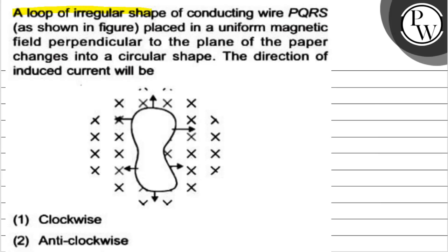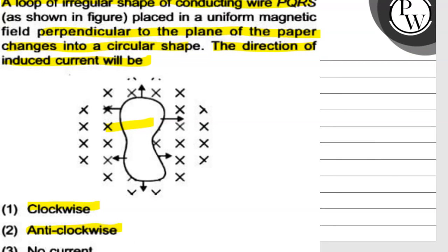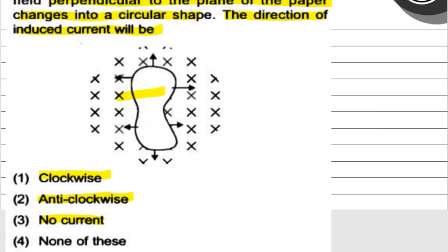A loop of irregular shape of conducting wire PQRS, as shown in figure, placed in uniform magnetic field perpendicular to the plane of the paper, changes into circular shape. The direction of induced current will be clockwise, anticlockwise, no current, or none of these.